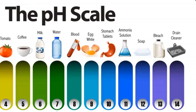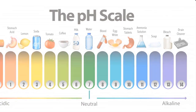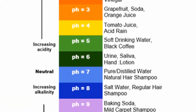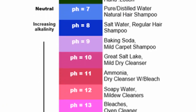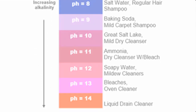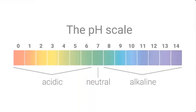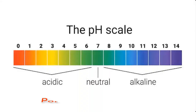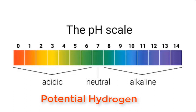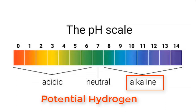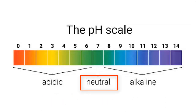Before we go into how to test the pH of your liquid soap or any other product, let's try to understand the basic chemistry of pH. pH, which literally means potential hydrogen, is a term used to describe the degree of acidity or alkalinity of a solution. A solution can either be acidic, alkaline, or neutral.